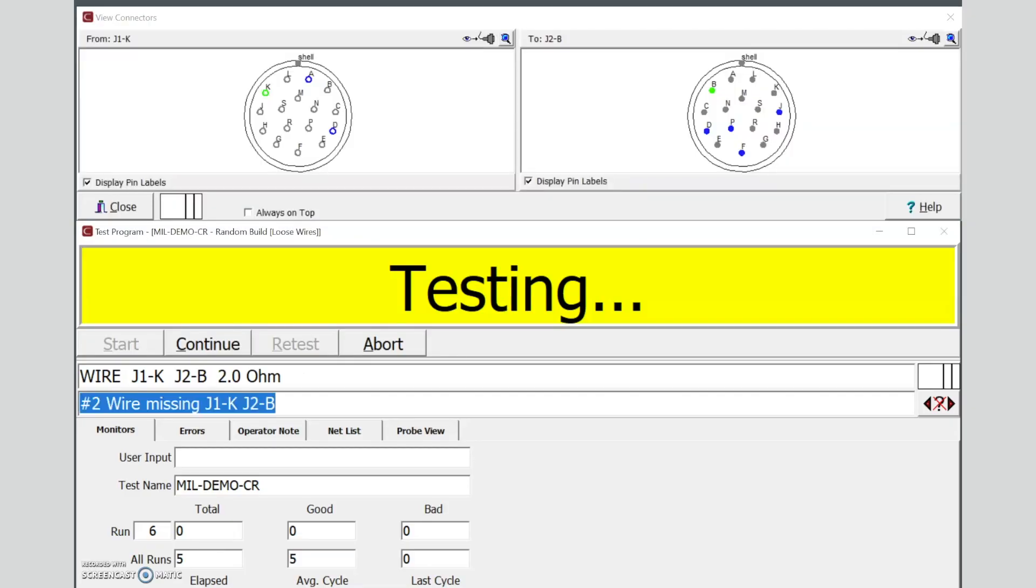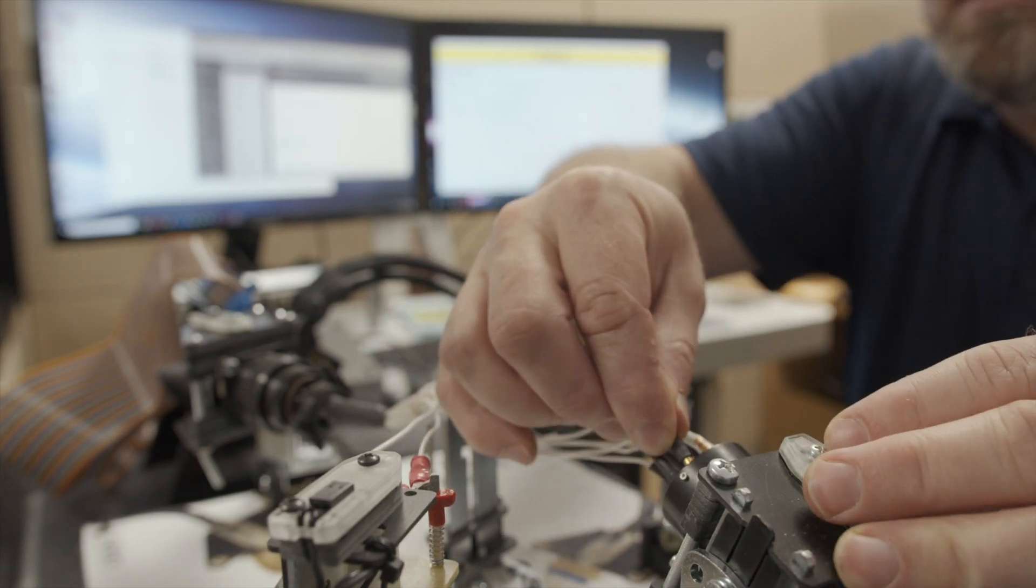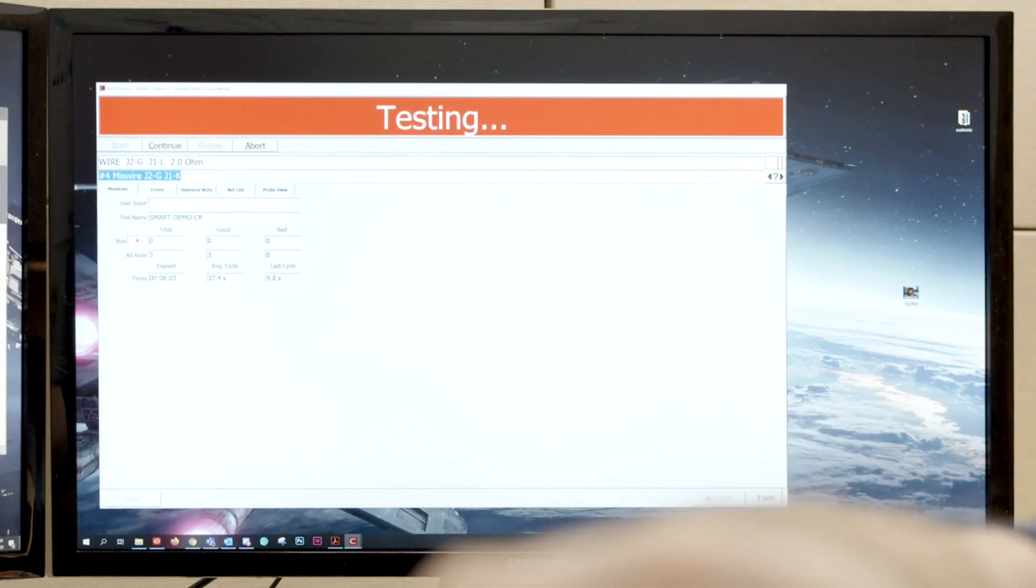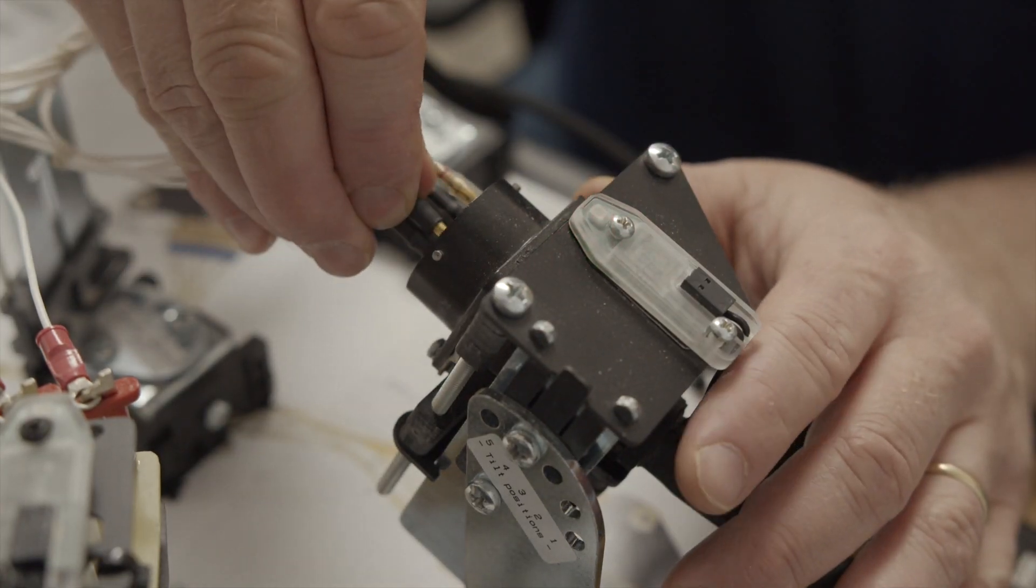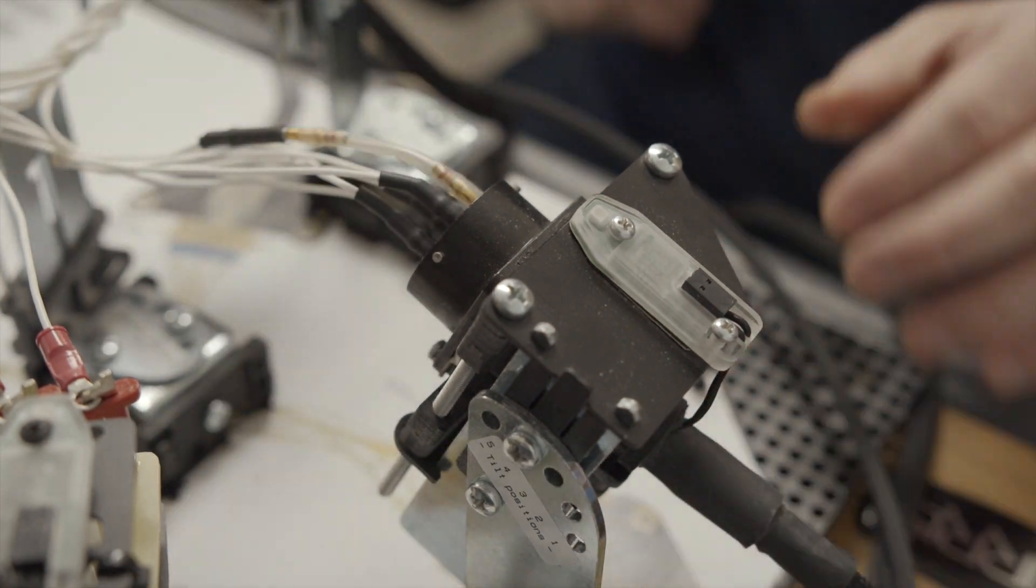The tester will monitor the cable while the operator finds and connects errors. Audible feedback can alert operators of errors, in addition to graphical instructions on the screen and LED prompts on the harness board. This technique guarantees the cable is wired according to specifications.